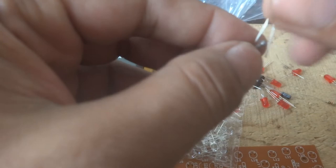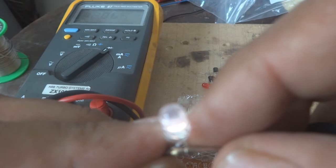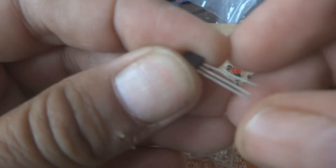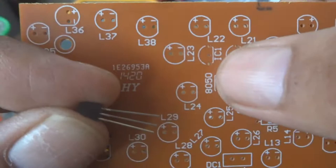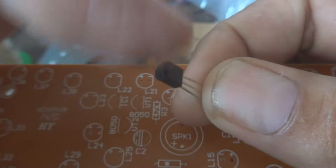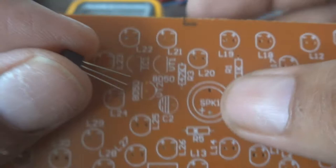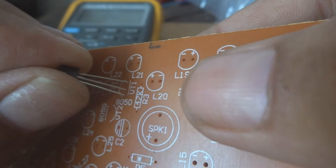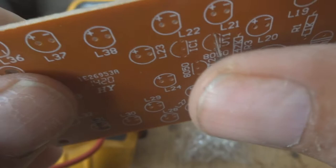Later on, the transistors are coming—these three-leg devices. On the transistor, there are two sides: one flat, one round. The flat side we'll put on the flat marking here, and the round side goes to the round marking. We'll insert the transistor this way, with this lead length, then solder it.